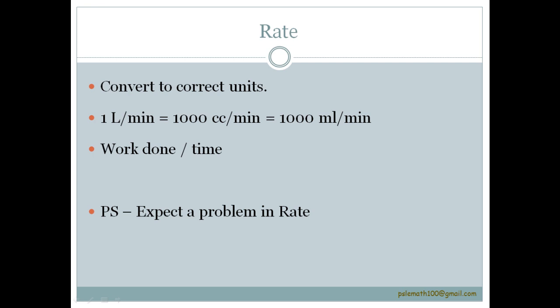Problems on work done per time. For example, when two people do the same work it is always faster than being done by one person. Remember that and check your answers.